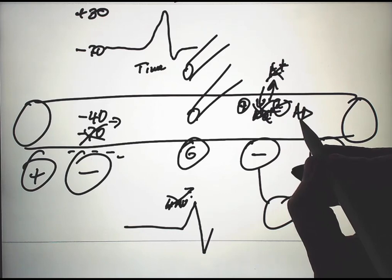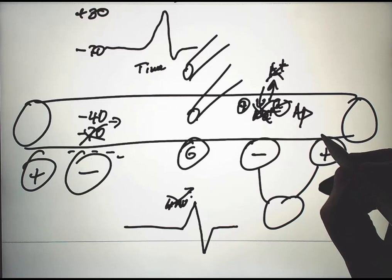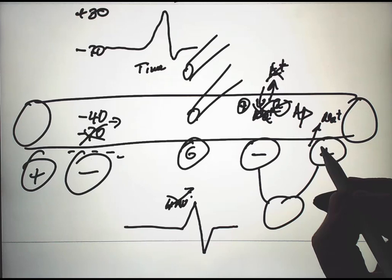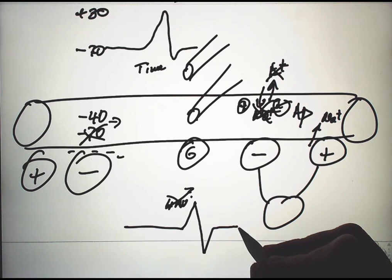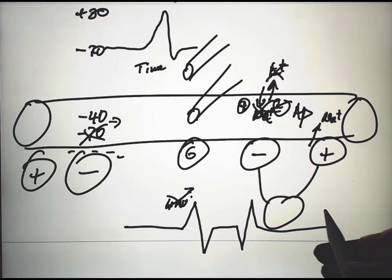So it takes a while for the action potential to get to the next electrode. If there's enough time, the action potential gets here. Now we have sodium coming in. That's making the outside here less positive. We're moving a positive ion in, so we get a downward deflection, an upward deflection, and back.